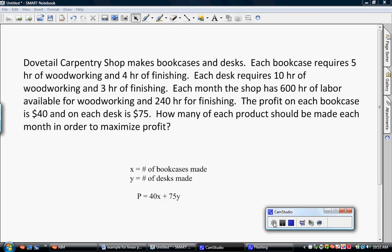In linear programming problems, we must also look for constraints. There are two constraints that are almost understood in every problem. X should be greater than or equal to zero, and y should be greater than or equal to zero. In this problem, that's true because the least amount of bookcases that you could make would be zero, and the least amount of desks that you could make would be zero.